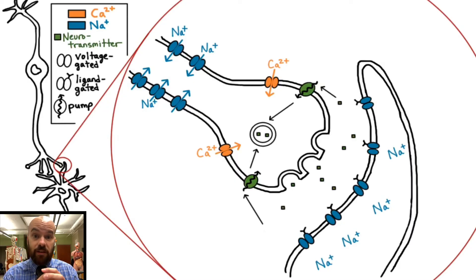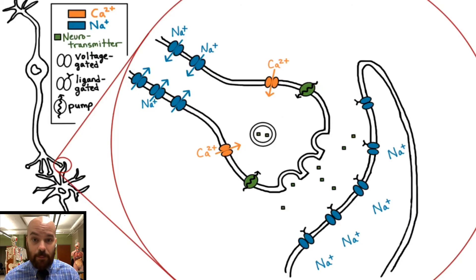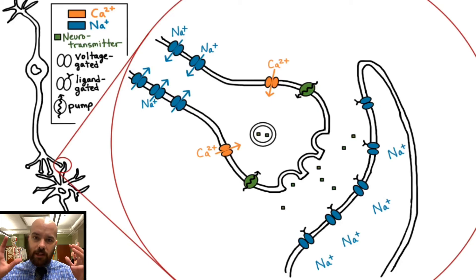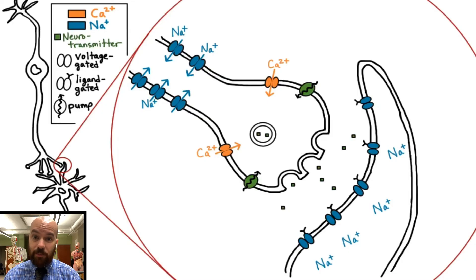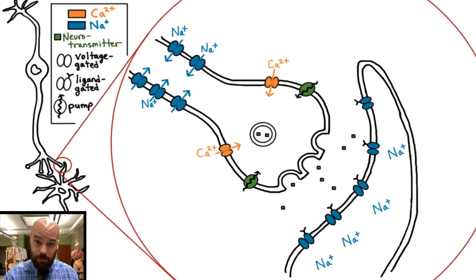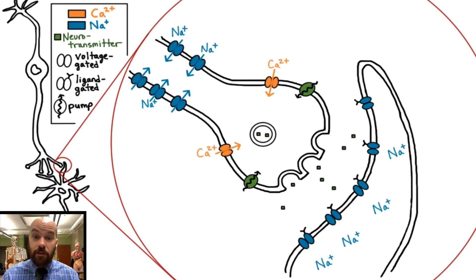The neurotransmitters diffuse away and a lot of them get recycled or reuptaken into the presynaptic cell, where they get repackaged into vesicles ready for the next action potential and the next synaptic transmission. This whole process takes place very quickly — we're talking in terms of milliseconds. Now, test yourself: I'm going to replay through the whole animation without the steps listed and without talking. See if you can narrate and describe what's happening in each step. If you can do that, you know this process pretty well.